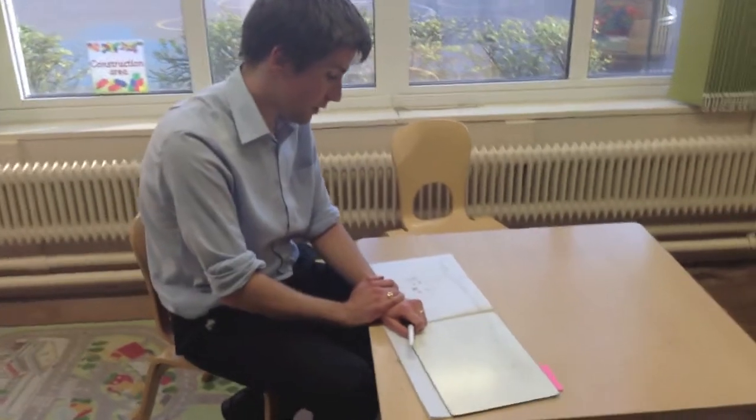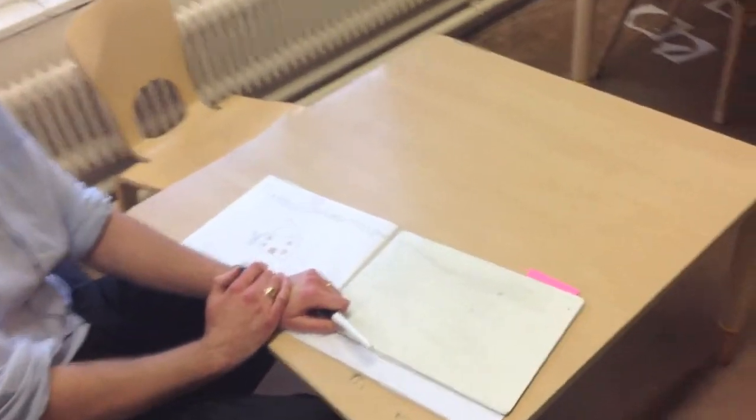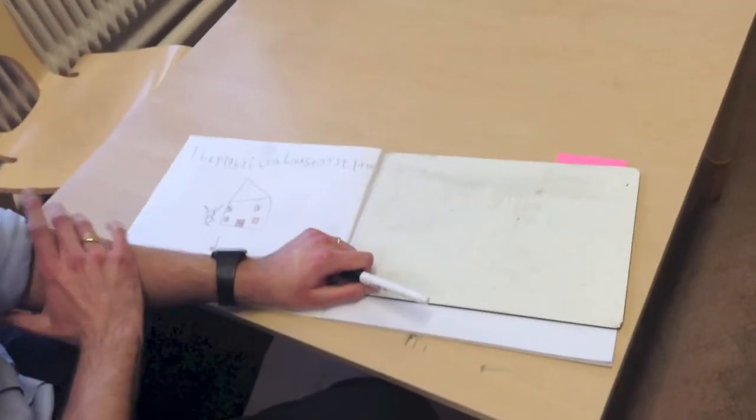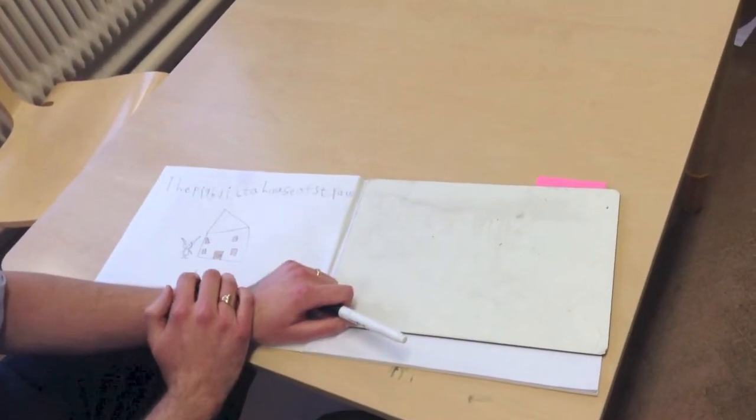When children learn to write, they will form their sentences, usually with a string of letters, without finger spaces, sometimes without capital letters, and not always with a full stop at the end.